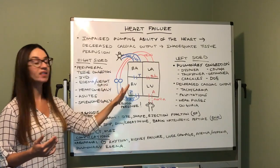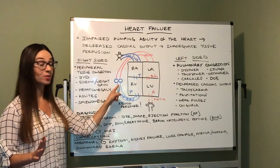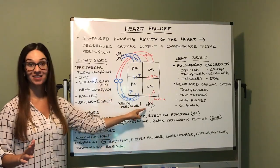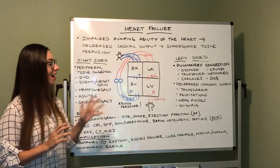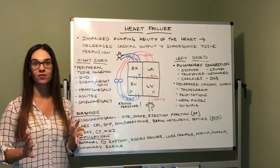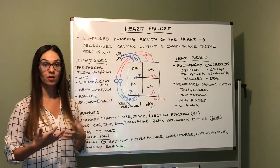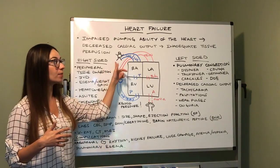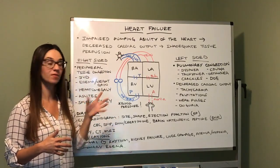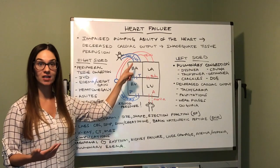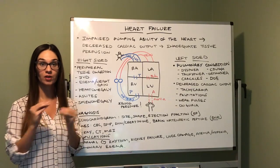Let's do a brief recap of how the heart works. Once our body utilizes oxygen for our tissues and cells for our metabolic demands, that blood comes back to our heart via two large veins — the superior vena cava and the inferior vena cava. This blood is deoxygenated, meaning it's not carrying oxygen until it gets to the lungs for gas exchange to occur.